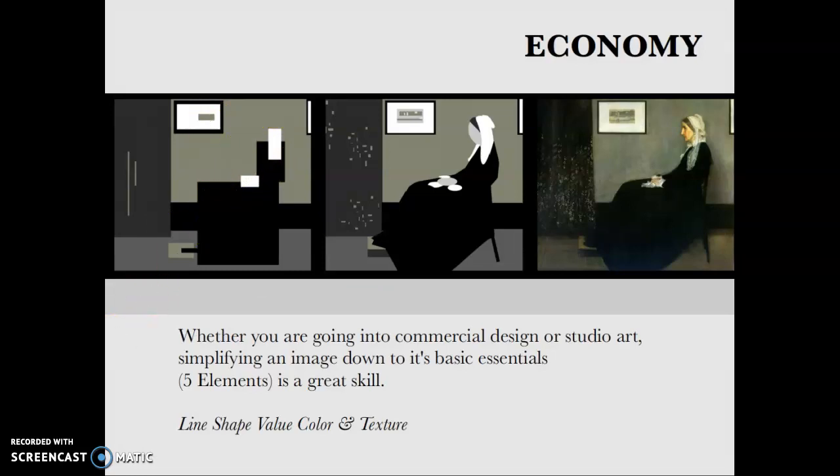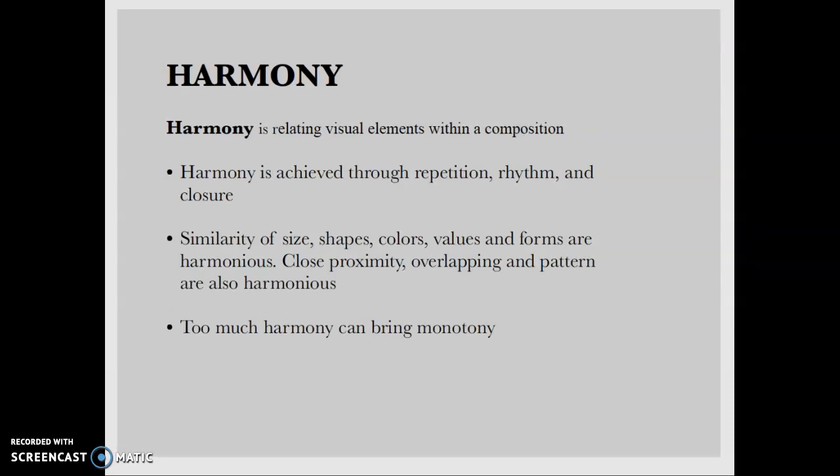Let's move on to harmony which is relating visual elements within a composition. It's achieved through by using repetition, rhythm, and closure. You can have harmony by using a similarity of sizes, shapes, colors, values, and forms that are harmonious, that work together. Too much harmony can bring out monotony. We remember with symmetry that symmetrical bilateral symmetry might feel like it's not moving, it might not feel dynamic. Harmony brings about a cohesive pleasing interaction achieved through rhythm, repetition, and closure. So we're going to look at all of these definitions and what they mean.